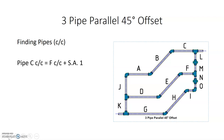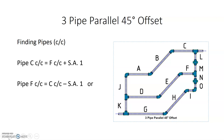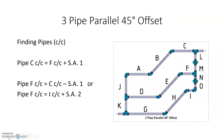To find pipe C, the closest adjacent parallel pipe is F, so we take F center-to-center and add SA1, since C is a bigger pipe. To find pipe F, being the middle pipe, we have two options: take C center-to-center and subtract SA1, or take I center-to-center and add SA2. To find pipe I, we take F center-to-center and subtract SA2.